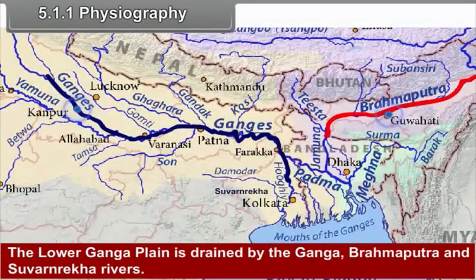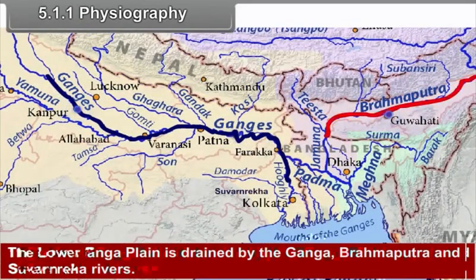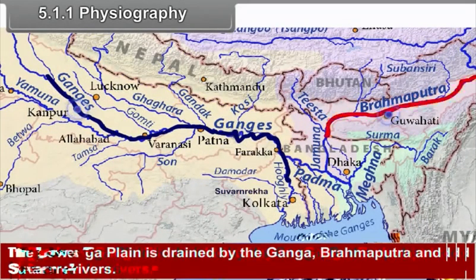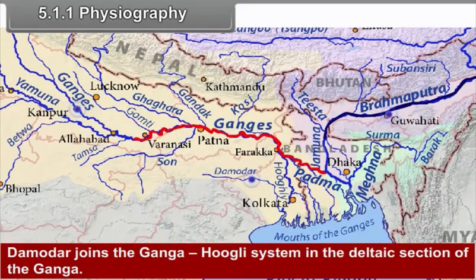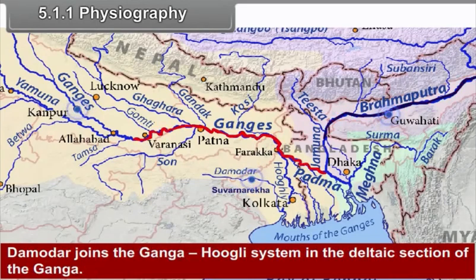The lower Ganga plain is drained by the Ganga, Brahmaputra and Subarnarekha rivers. The Damodar joins the Ganga-Hooghly system in the delta section of the Ganga.